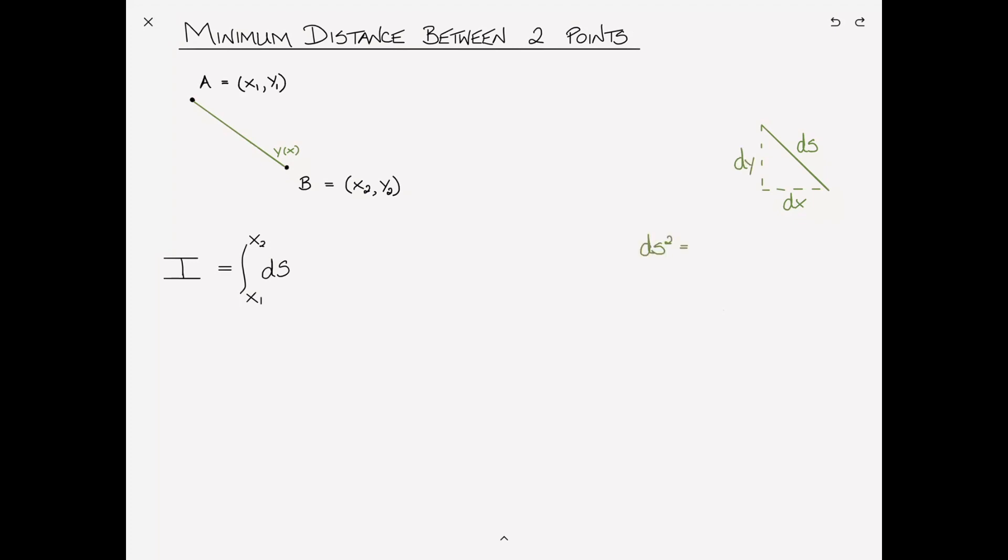If this is the incremental path length ds, we can complete this triangle by dropping the vertical and horizontal sides, and this is dx and dy. And then using Pythagoras, ds² is equal to dx² plus dy².